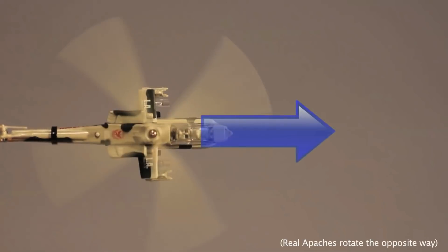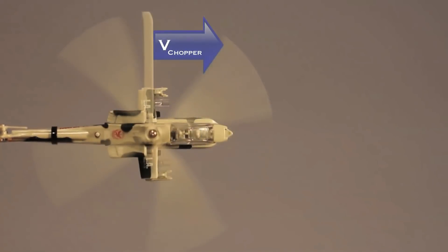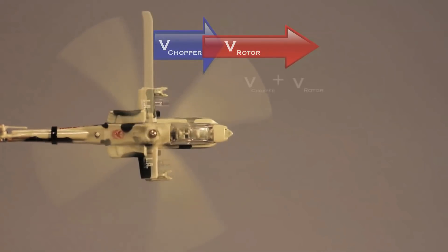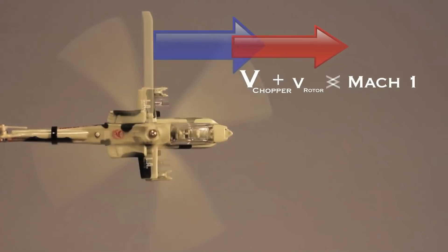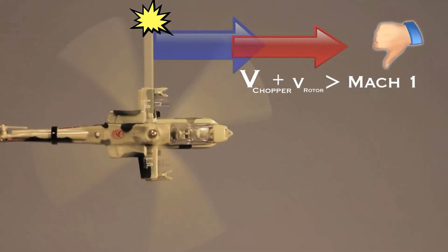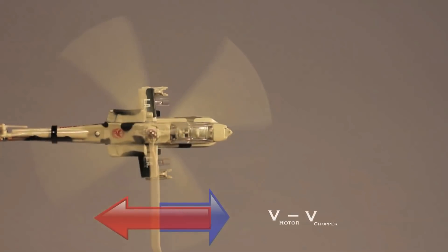As the chopper flies forward, the air flows over both sides of the helicopter. The advancing blade is also traveling forward, so this adds to the air velocity of the rotor on that side. As long as the airspeed of the rotor stays under the sound barrier, you're okay. But if the helicopter goes too fast, you'll create shock waves and start to damage things. The retreating blade sees the same airflow of the vehicle movement, but because the blade is traveling in the opposite direction, the actual airspeed of that rotor is less.